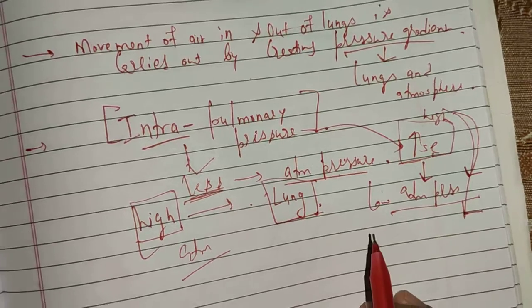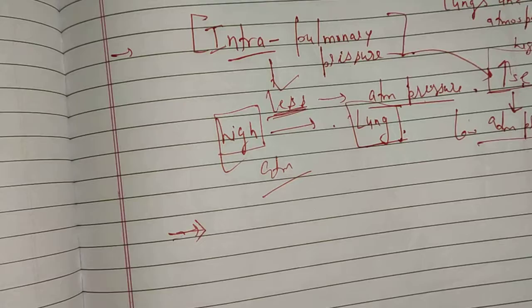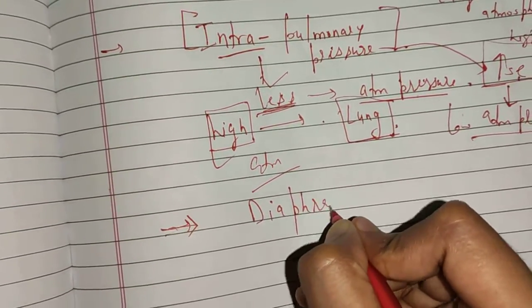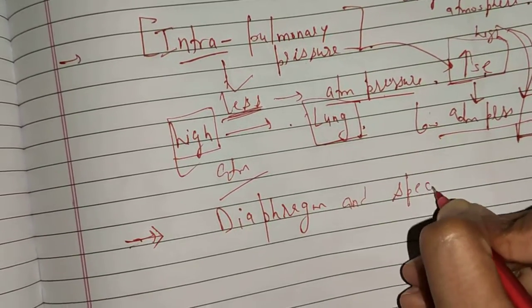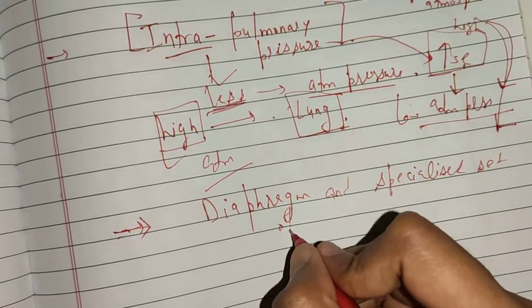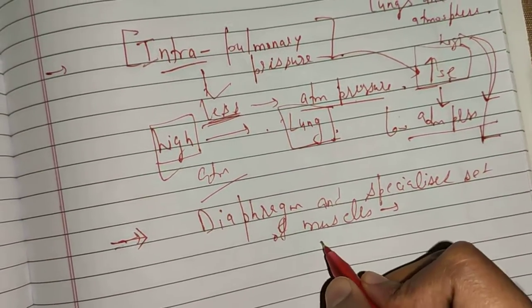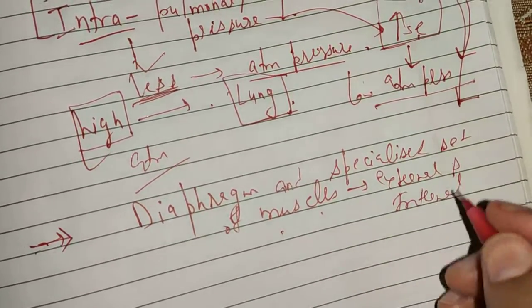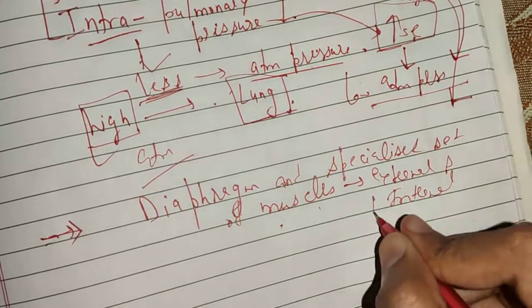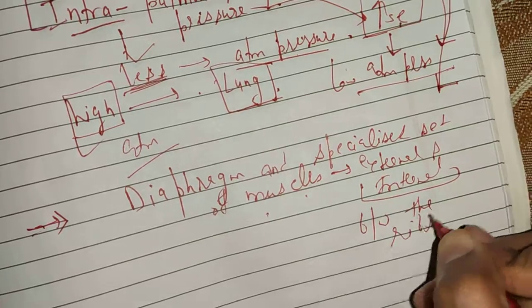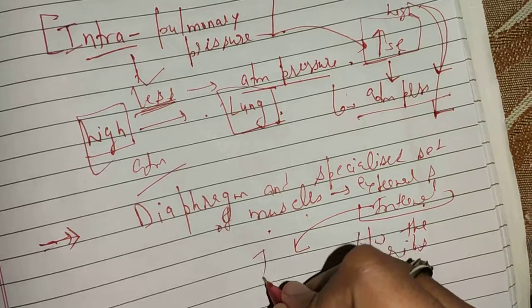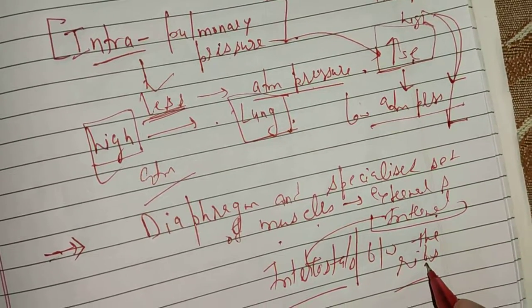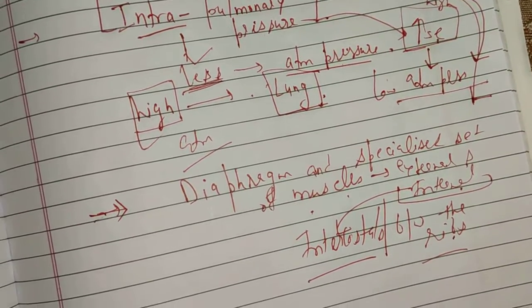The factors responsible for developing the pressure gradient include, most importantly, first the diaphragm, and second a specialized set of muscles. These specialized muscles are of two types: external and internal intercostal muscles, present between the ribs, which help in the generation of the pressure gradient.